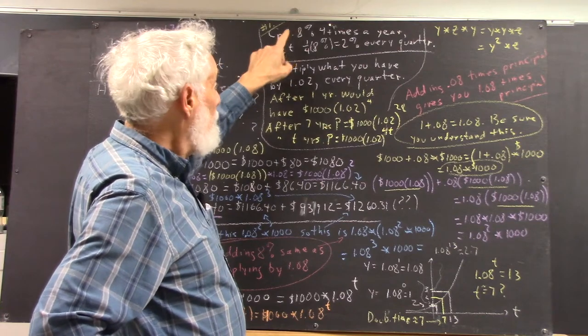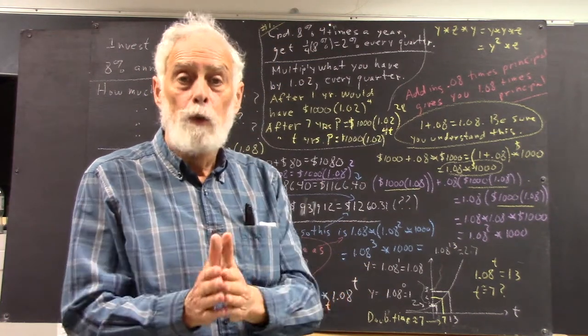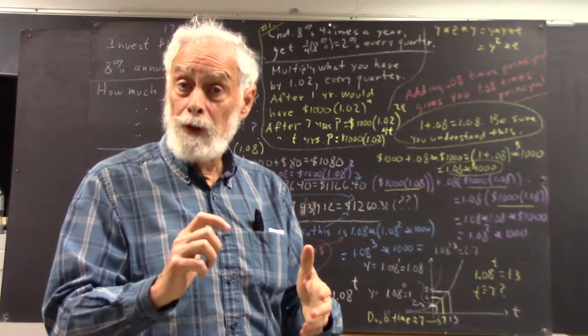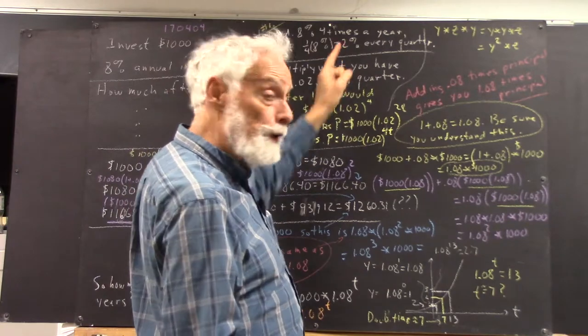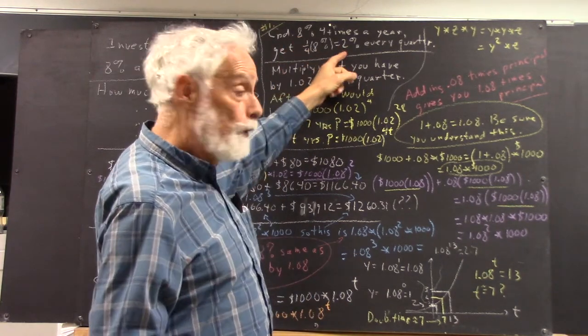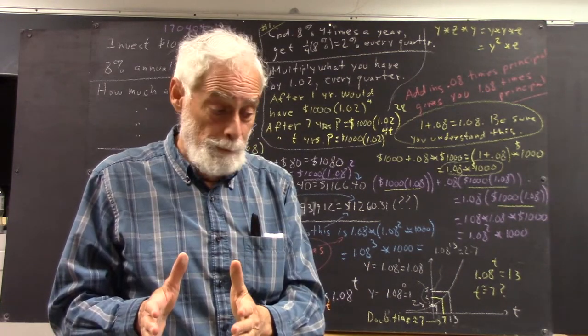So, if you compound 8% four times a year, what that means is after one-fourth of a year, you get one-fourth of 8%, which is 2%. You take that 8% and divide it by four, you get 2%. That's how much you get, but you get that every quarter of a year.